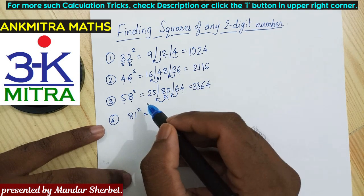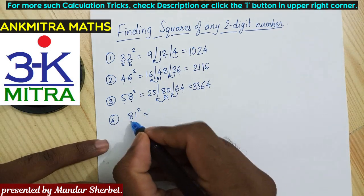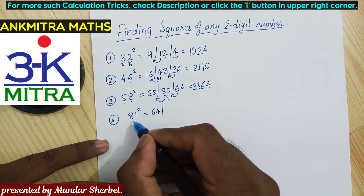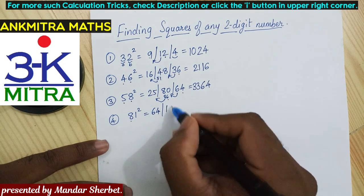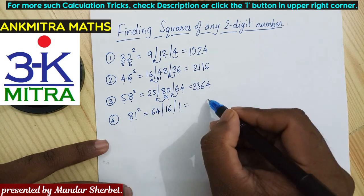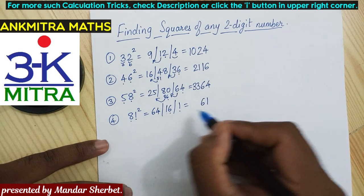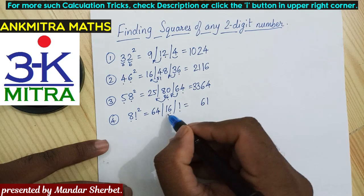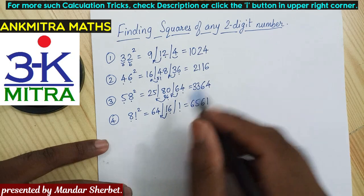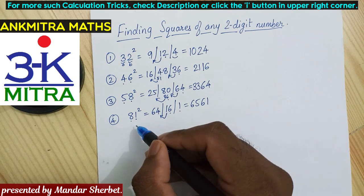With a little practice, most people can do it in much less time. For the square of 81, start with the square of 8, which is 64. Multiply 8 by 1 to get 8 — double of 8 is 16. Square of 1 is 1. For the final answer, 1 goes to the units place. From 16, 6 goes to the tens place and 1 is carried. 64 plus 1 is 65. The final answer is 6561, which is the square of 81.